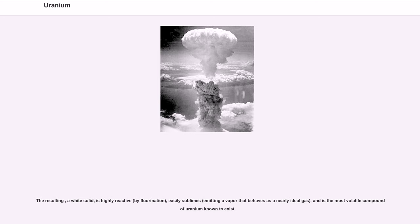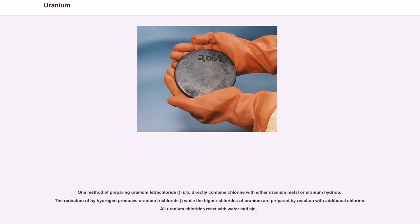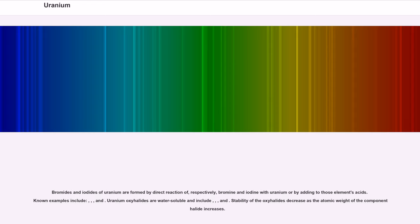This compound can be prepared from uranium dioxide and uranium hydride by the following process. The resulting UF6, a white solid, is highly reactive by fluorination, easily sublimes, emitting a vapor that behaves as a nearly ideal gas, and is the most volatile compound of uranium known to exist. One method of preparing uranium tetrachloride (UCl4) is to directly combine chlorine with either uranium metal or uranium hydride. The reduction by hydrogen produces uranium trichloride (UCl3), while the higher chlorides of uranium are prepared by reaction with additional chlorine. All uranium chlorides react with water and air. Bromides and iodides of uranium are formed by direct reaction of, respectively, bromine and iodine with uranium or by adding UH3 to those element's acids. Uranium oxyhalides are water-soluble and include UO2F2, UOCl2, UO2Cl2, and UO2Br2. Stability of the oxyhalides decreases as the atomic weight of the component halide increases.